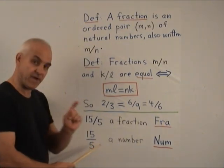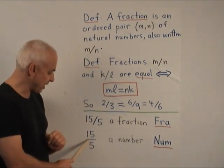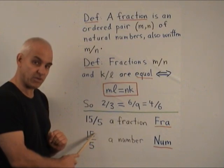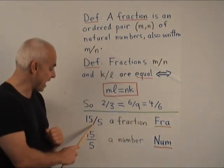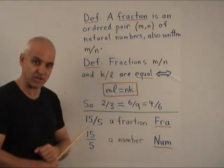So from now on, we're going to be fussy. We're going to distinguish between a horizontal line, which means division of one natural number by another, and the slanted line, which represents fraction for us.